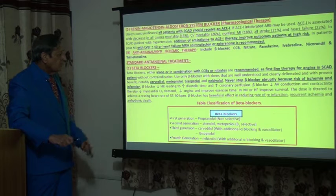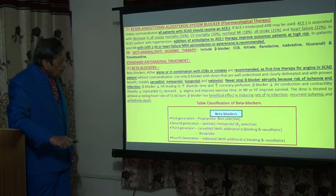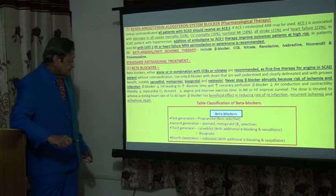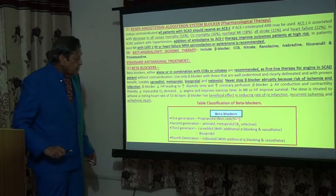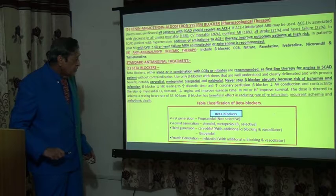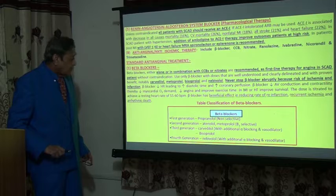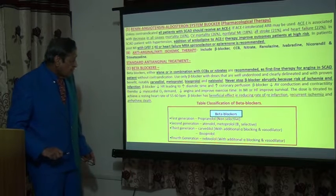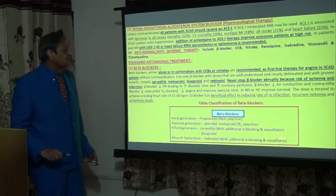The classification of beta blockers: First generation — propranolol, non-selective. Second generation — atenolol and metoprolol, beta-1-selective. Third generation — carvedilol and bisoprolol, with additional alpha-blocking and vasodilatory properties. Fourth generation — nebivolol, with additional alpha-blocking and vasodilatory properties.